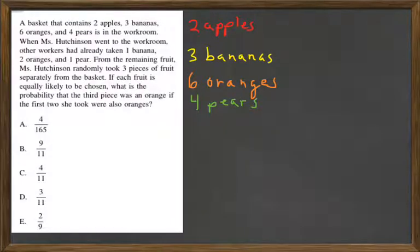Question 20 is a probability one. A basket that contains two apples, three bananas, six oranges and four pears is in the workroom.